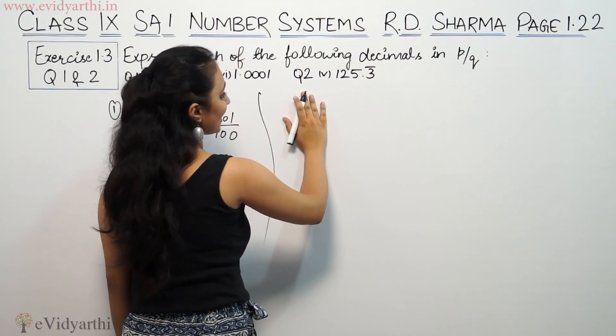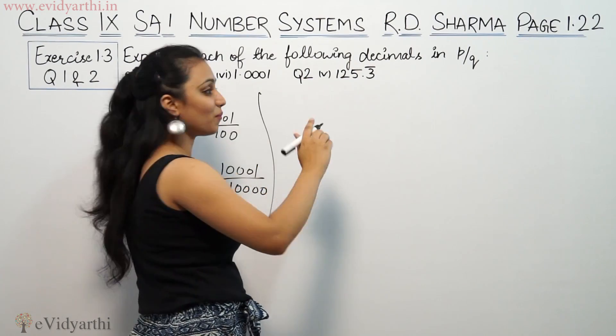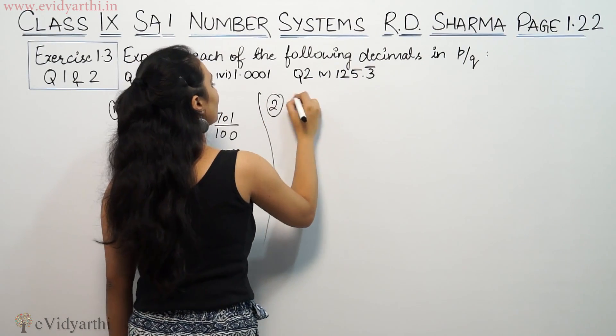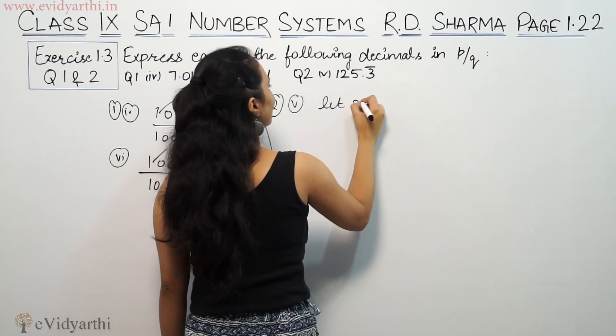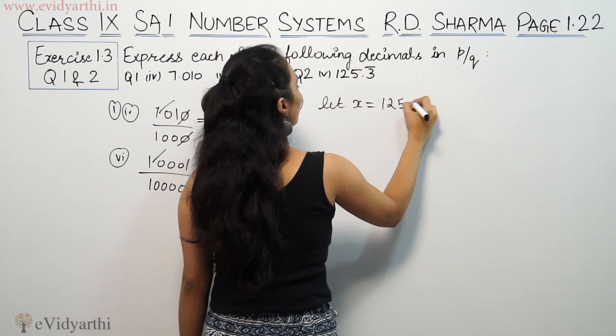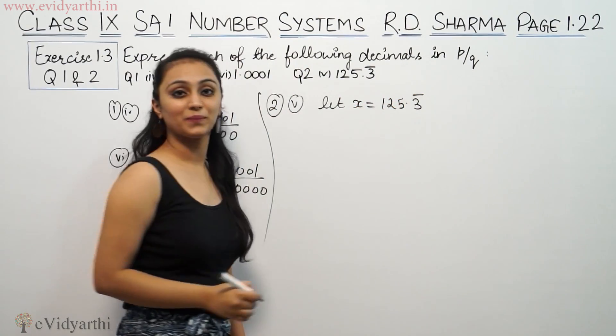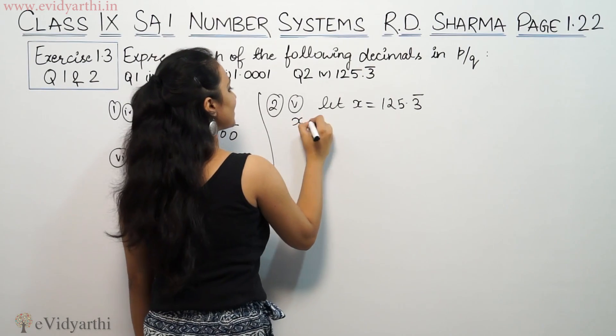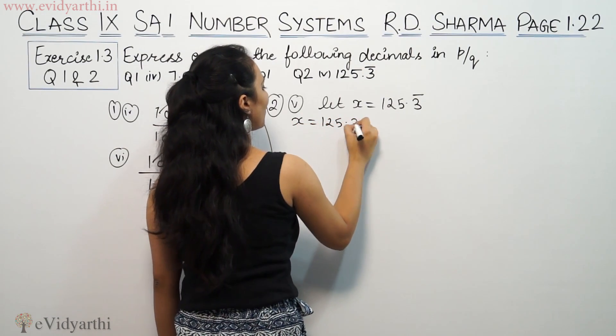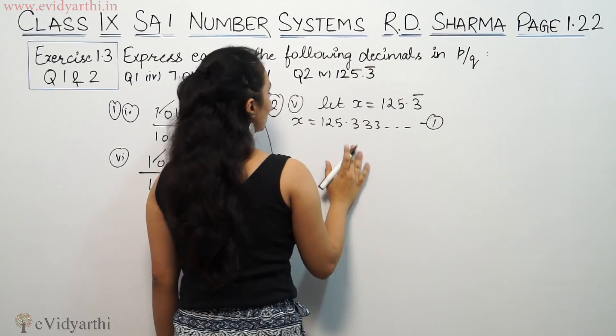This is the part from question number 2. We have to represent it in P/Q form. Let us say x equals 125.3 bar. This means x equals 125.3333... This is equation 1.